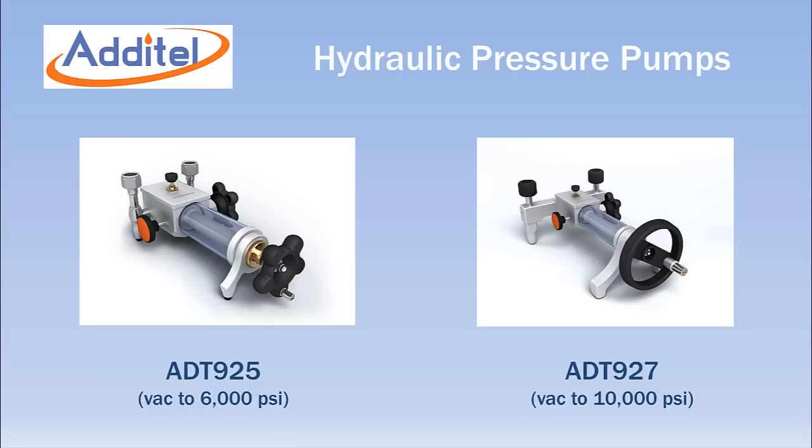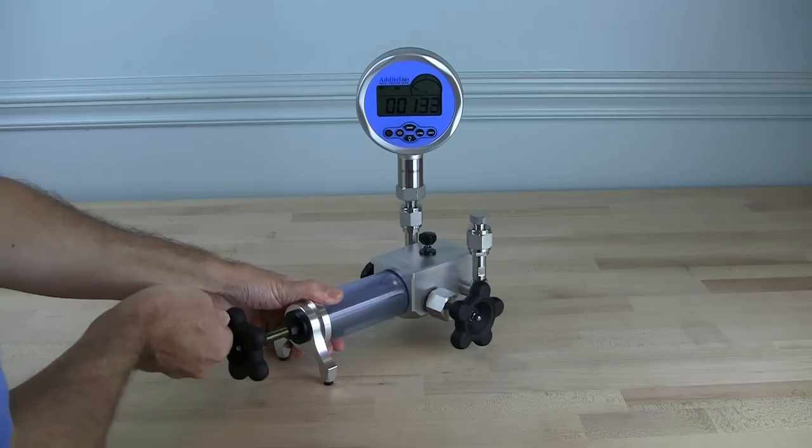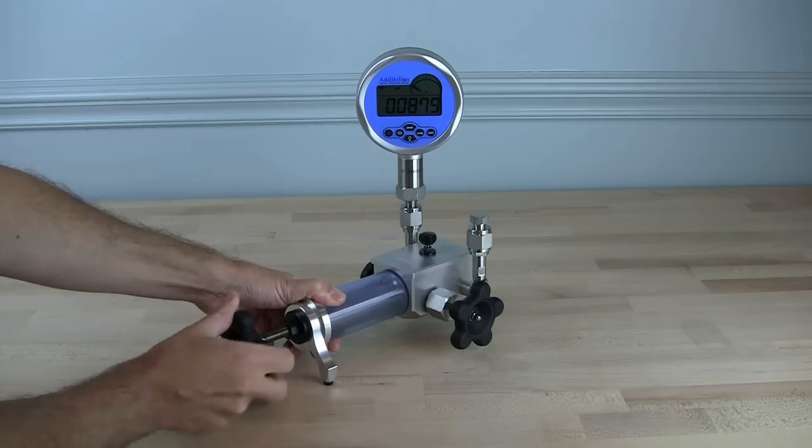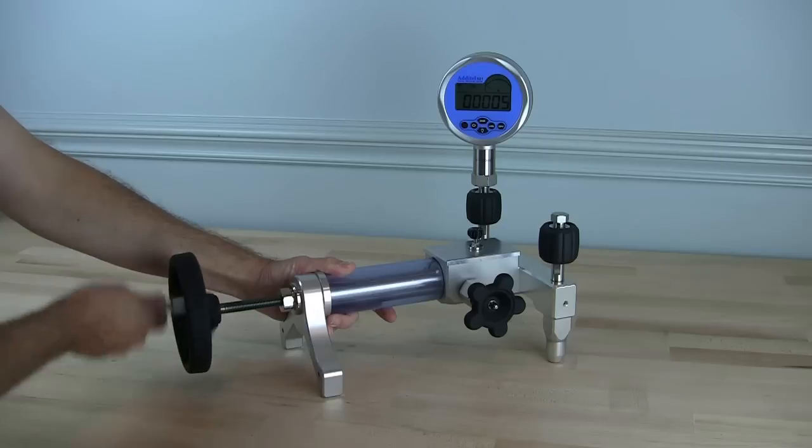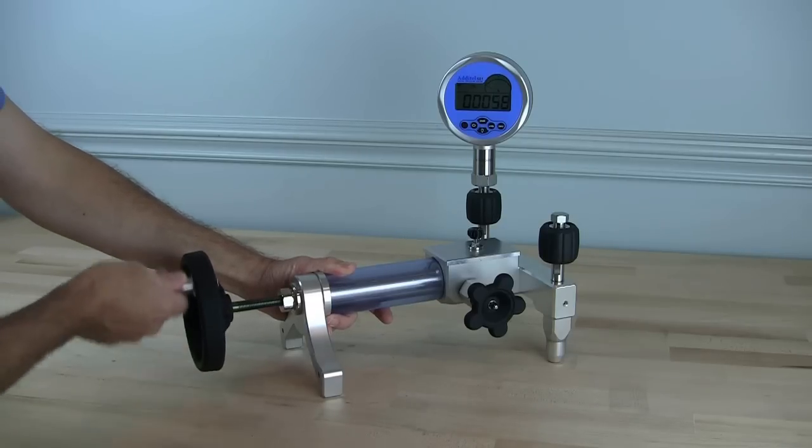The Adytel ADT925 and 927 are compact portable hydraulic pressure pumps with a maximum range of 6,000 PSI and 10,000 PSI respectively. Oil or deionized water can be used as the pressure media.